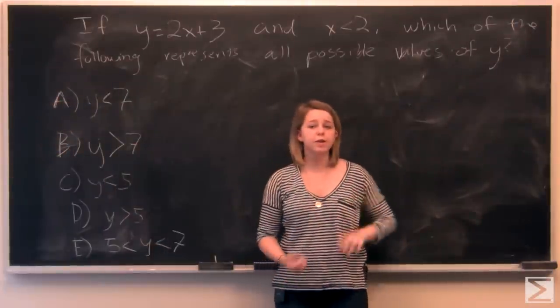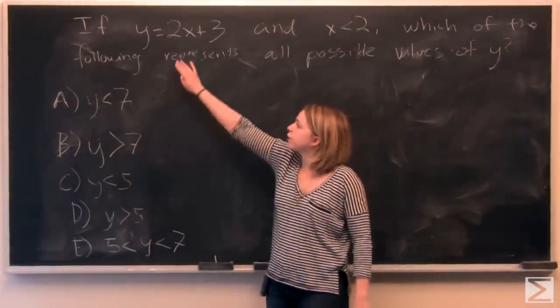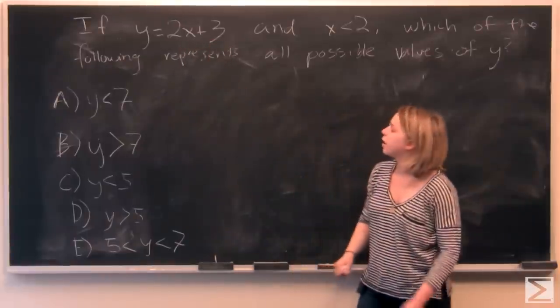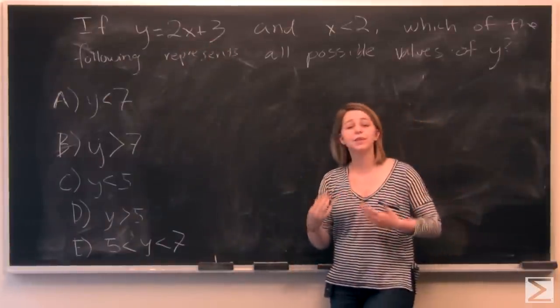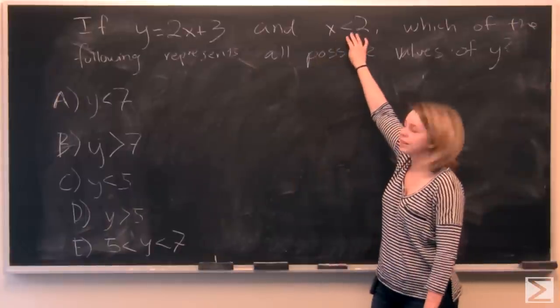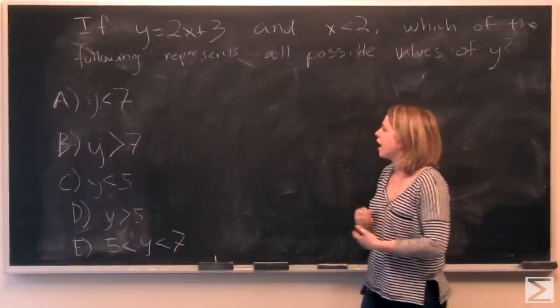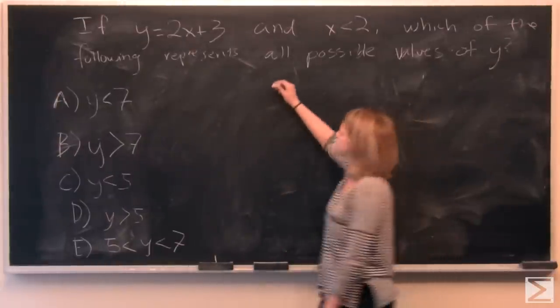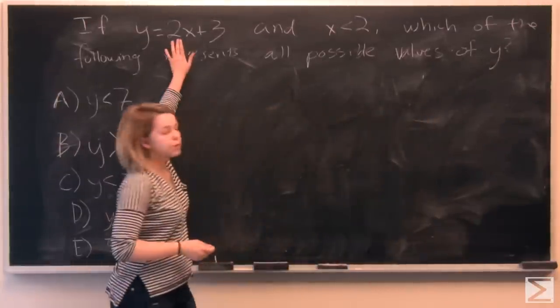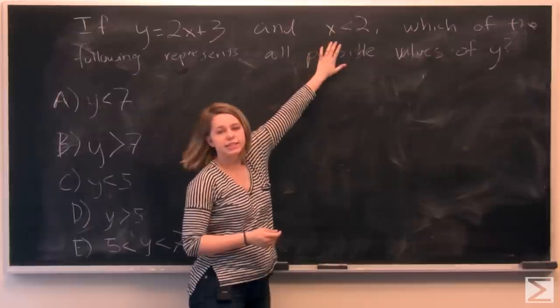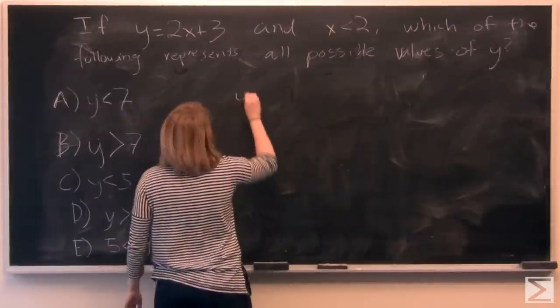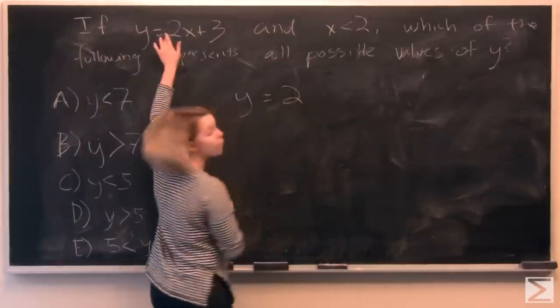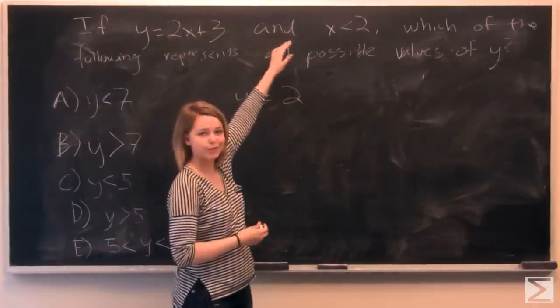So in our third and final problem for this video, we're given the equation y equals 2x plus 3. And the limit that x is less than 2. And we're trying to find all of the possible values of y. So let's start by finding what y is equal to when x is less than 2. So let's find what y is equal to when x is equal to 2.